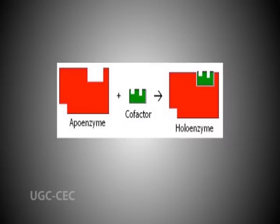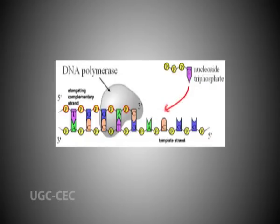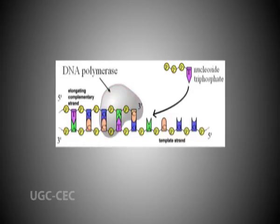The term holoenzyme can also be applied to enzymes that contain multiple protein subunits, such as DNA polymerase. Here, the holoenzyme is the complete complex containing all the subunits needed for its activity. DNA polymerase is a holoenzyme that catalyzes the polymerization of deoxyribonucleotides into a DNA strand. DNA polymerase is an active participant in DNA replication — it reads the intact DNA strand as a template and uses it to synthesize a new strand. The newly polymerized DNA strand is complementary to the template strand. DNA polymerase uses a magnesium ion for its catalytic activity.